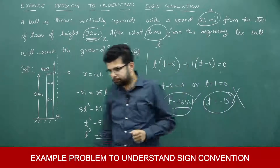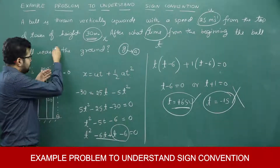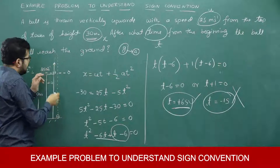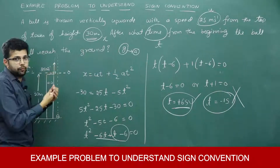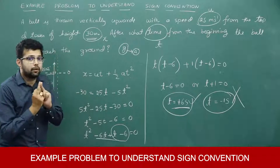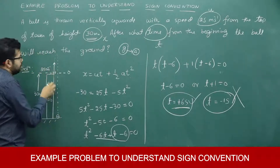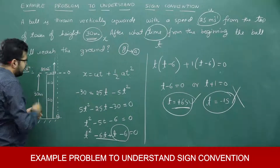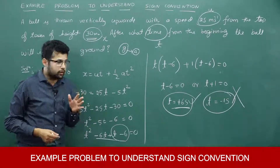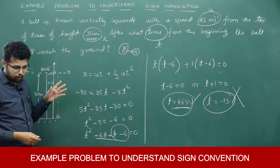You may think: the ball goes up and then comes down — did we not consider the distance travelled upward? Remember, in this equation x is displacement, not the distance travelled. So even though the ball changes direction, since acceleration is constant, we can directly use this formula.